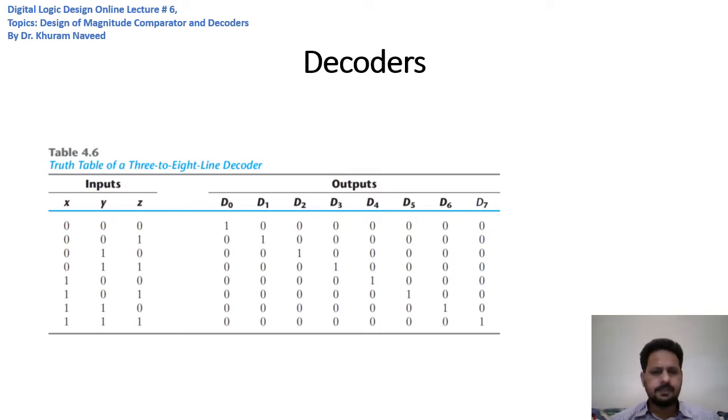In this case, we see a three-to-eight line decoder, a truth table of a three-to-eight line decoder that implements a very simple code where each of these binary combinations